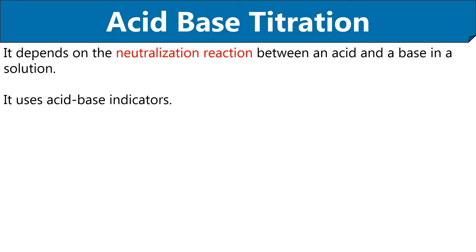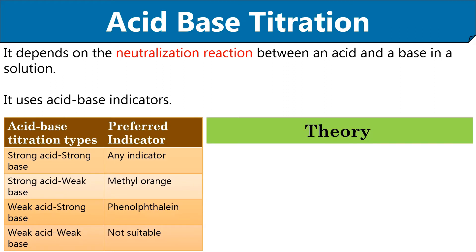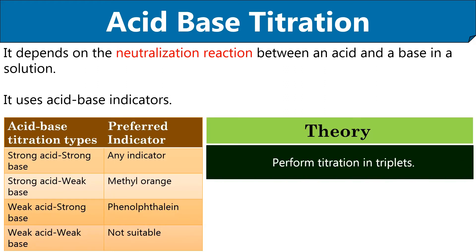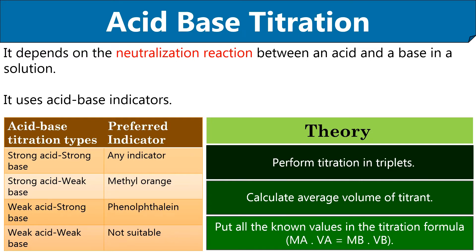This type of titration uses acid-base indicators that are mentioned in this table. Coming into the theory of acid-base titration, it is usually performed in three trials or triplicates in which titrant is added to the sample until the color of the solution turns pink. Then we can calculate the average titer, or the volume of titrant added to the sample, by taking the values of the titration volume from the three trials and dividing by 3. You can calculate the titration volume by subtracting the final volume of titrant from the initial volume of titrant.